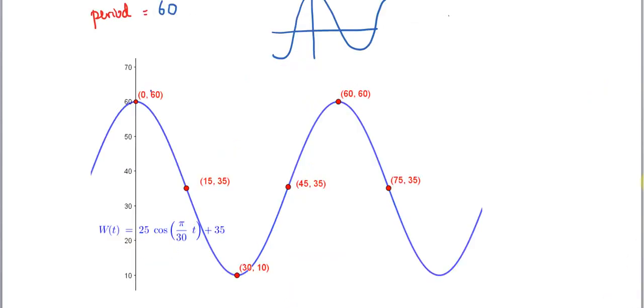Alright, so with the magic of graphing utilities, you see that I've graphed this function here in a computer so you can see what exactly it looks like. You can see that initially you have a maximum of (0, 60) and then you have a minimum of (30, 10) and then a maximum again of (60, 60) and then it's going to have a minimum.